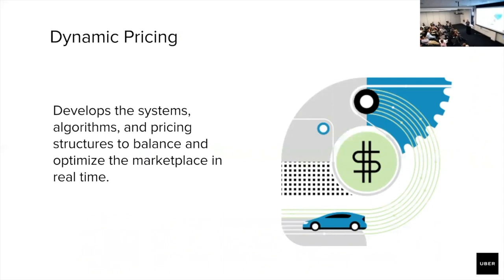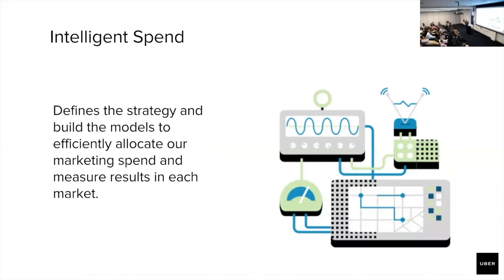We have a variety of teams. One is called Dynamic Pricing — you may have heard the wonderful word 'surge.' That team calculates the multiplier, looking at what's the right way to motivate drivers and signal to riders that there's high demand, in order to balance the marketplace in real time. But we also do an enormous amount of long-term incentives — sending out millions of emails every week to drivers. A lot of our effort is calculating ahead of time that we'll need more drivers on Saturday due to a special event, or that we're consistently undersupplied on Tuesday nights.